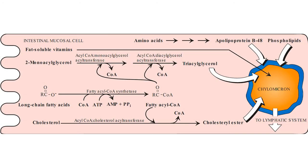Resynthesis of triacylglycerols and cholesteryl esters — the mixture of lipids absorbed by the enterocytes migrates to the endoplasmic reticulum where biosynthesis of complex lipids takes place. Using the fatty acyl coenzyme A derivatives, the 2-monoacylglycerols absorbed by enterocytes are converted to TAGs through sequential reacylations by acyl-CoA monoacylglycerol acyltransferase and acyl-CoA diacylglycerol acyltransferase. Lysophospholipids are reacylated to form phospholipids, and cholesterol is esterified with a fatty acid primarily by acyl-CoA cholesterol acyltransferase. Virtually all long-chain fatty acids entering enterocytes are used to form triacylglycerols, phospholipids, and cholesteryl esters.